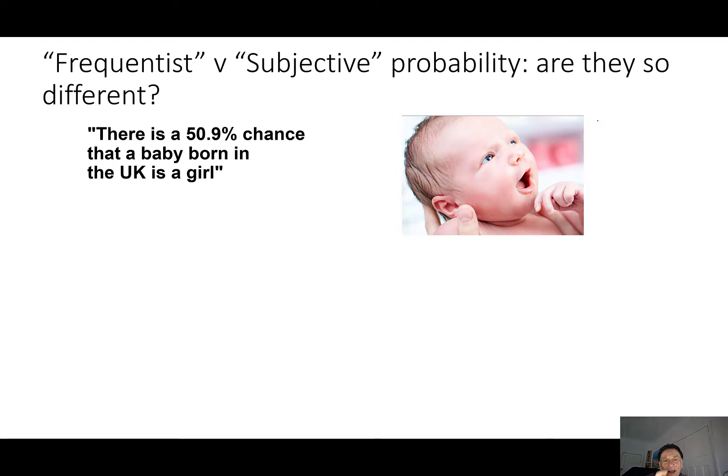And if we slightly change this to say, what's the chance that the particular mother who is pregnant next week, what's that probability? Well, if we know nothing about that mother, then we might use this current frequentist probability based on recent data. But we might have much more information about that particular mother and come up with a different probability.